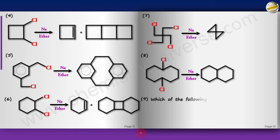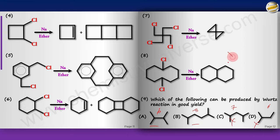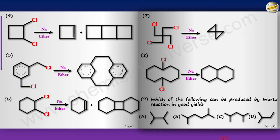MCQ example: which of the following alkanes can be produced by Wurtz reaction in good yield? First check whether carbon count is even. A 7-carbon compound is eliminated. An unsymmetrical 6-carbon compound is also eliminated. Of the remaining options, one requires a secondary bromide and one requires a primary bromide. Since primary halides give better yields than secondary, the answer is the option prepared from a primary bromide.